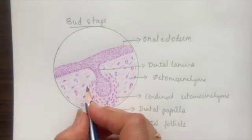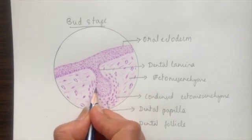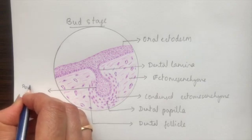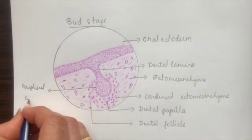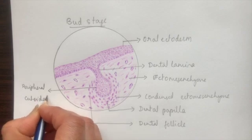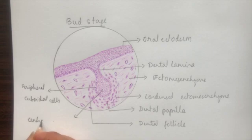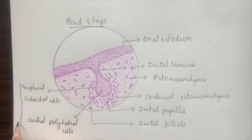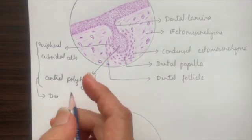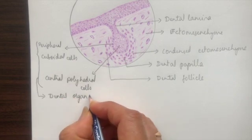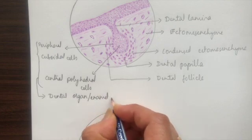Importantly, we label the bud cells: inside the bud these are peripheral cuboidal cells and central polyhedral cells. These two together form the dental organ, previously known as the enamel organ.